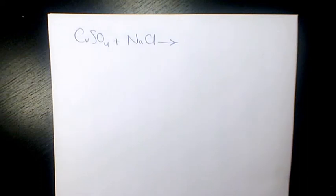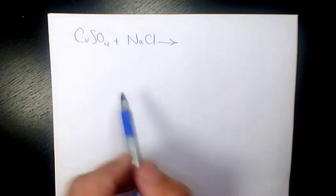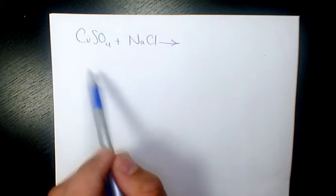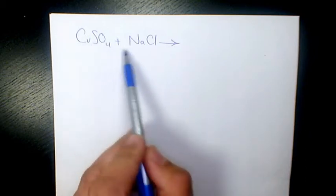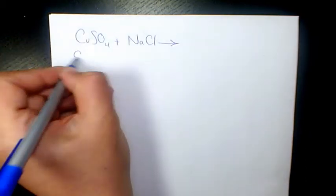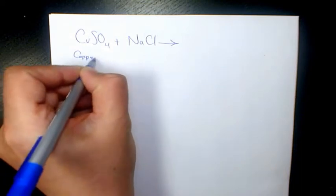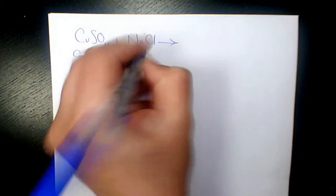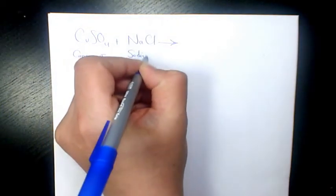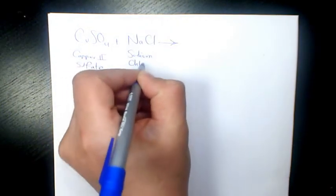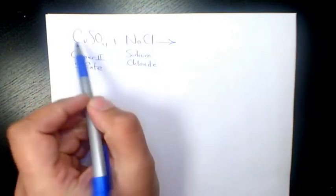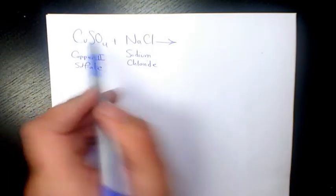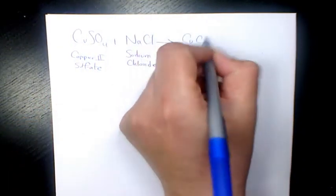What's up guys, this is Massey. Welcome to another video. In this video, I want to show you the reaction between CuSO4 and NaCl. CuSO4 is copper(II) sulfate, and NaCl is sodium chloride.